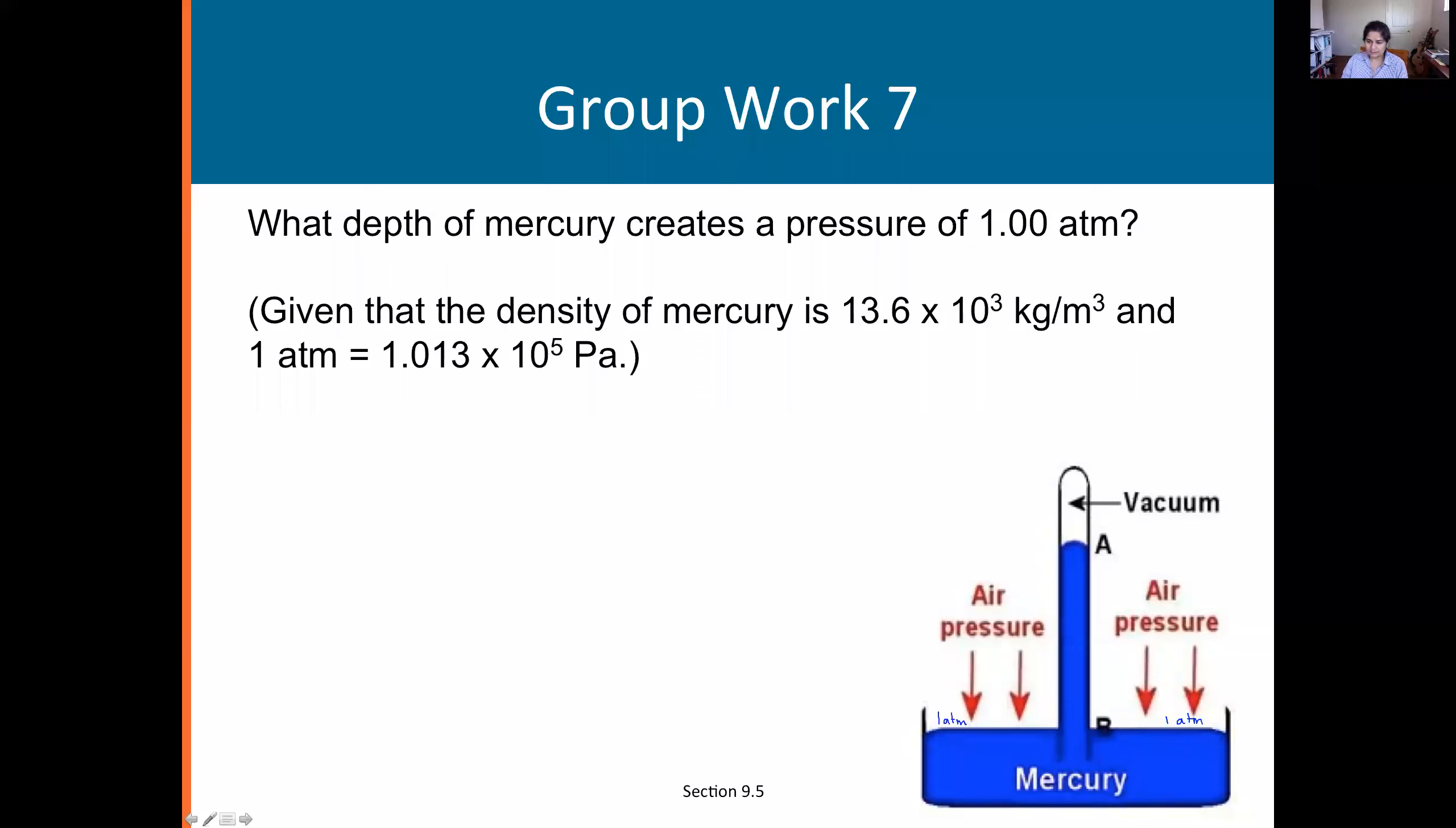Same as this side, both are exposed to the atmosphere. Same as on our bodies, we constantly have one atmosphere pressure. At the same height inside we must have one atmosphere pressure. The pressure in here, vacuum creates no pressure, so the pressure is entirely due to this column of mercury. That pressure is given by ρgh.